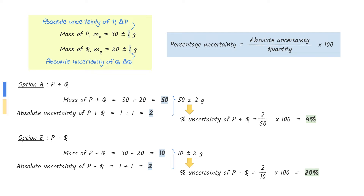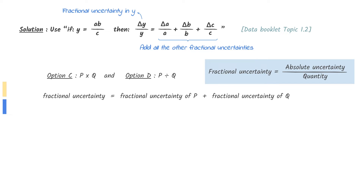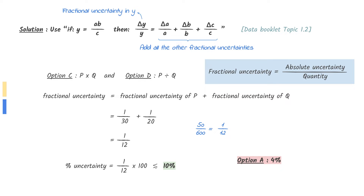Do the same with option b. The absolute uncertainty remains the same but the quantity of mass changes. The percentage uncertainty will be calculated to 20 percent. In multiplication and division, the percentage uncertainty can be found by multiplying the fractional uncertainty by 100. The fractional uncertainty can be found by adding all the fractional uncertainties. The fractional uncertainty of the product of options c and d will be the same. Therefore, the percentage uncertainty will also be the same, approximately slightly less than 10 percent. The least percentage uncertainty is option a with 4 percent.